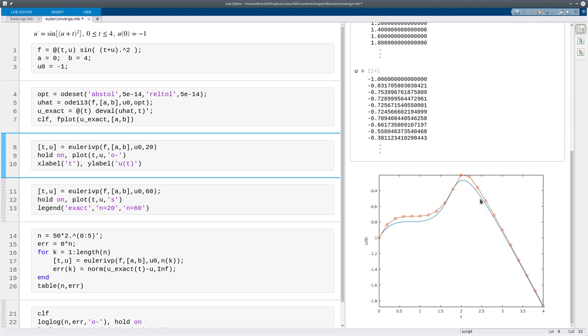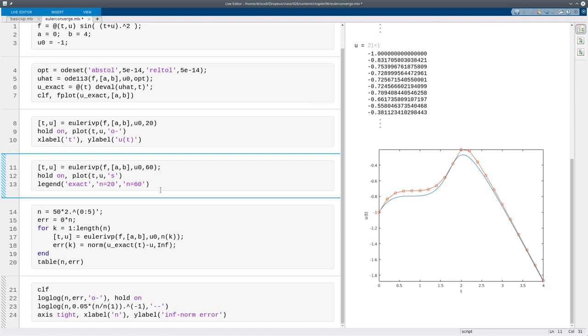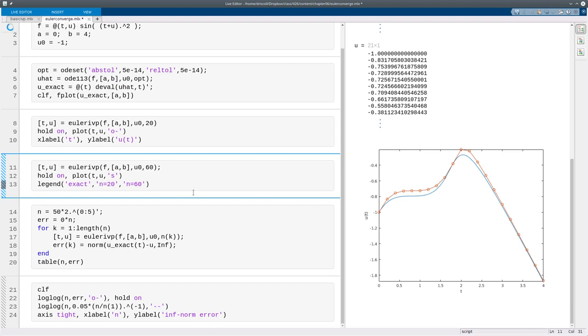If we want to make it more accurate, we use more steps, which is a smaller step size, which makes all the finite differences more accurate. So now you see the yellow circles are much closer to the solution than the original one that we had.